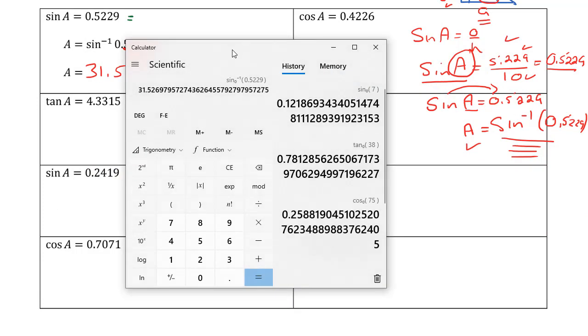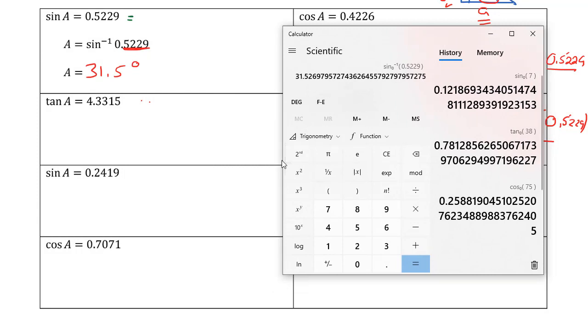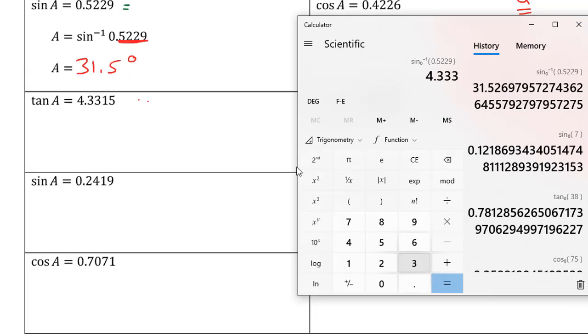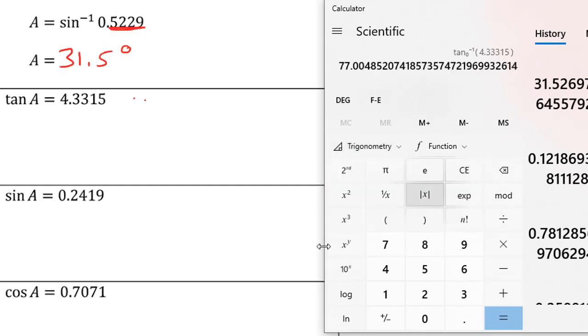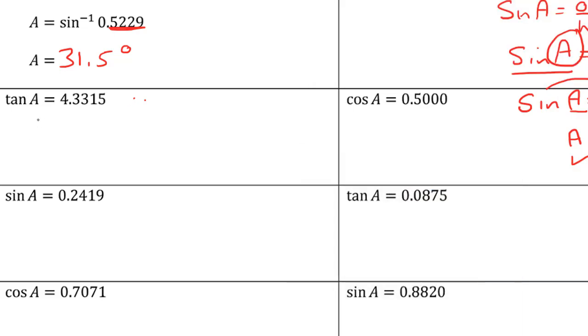Our next one: tan of angle A equals 4.3315. We start by typing in our ratio, then click on the trigonometry drop-down, and we want tan inverse. So we go to second function and then tan, and we see that angle is 77 degrees. Let's write down our steps. First we move the tan over, and angle A equals tan inverse of whatever the ratio was.